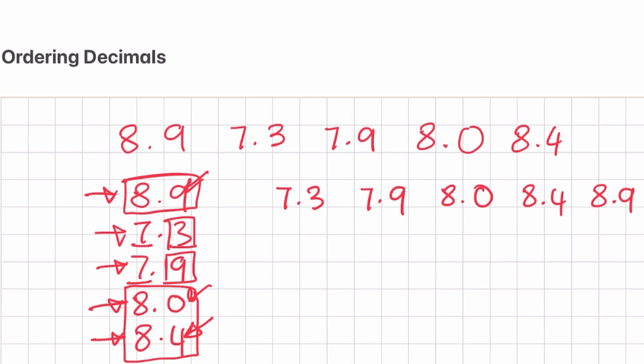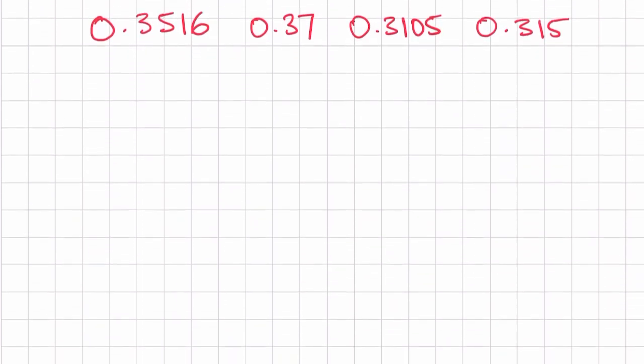So the order is 8.0, then 8.4 because 4 is next, and the largest number is 8.9. We've ordered these numbers from smallest to largest. Now these numbers only had one digit after the decimal — how about we have more than one digit? Let's have a look at the next example, where some numbers have two, three, or even four digits after the decimal.